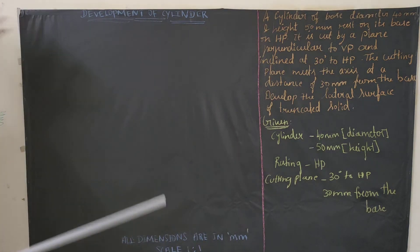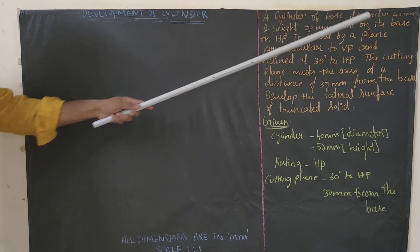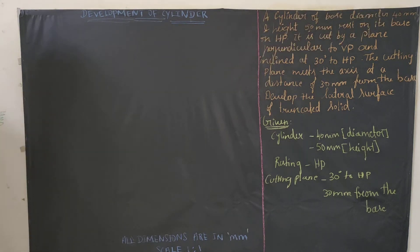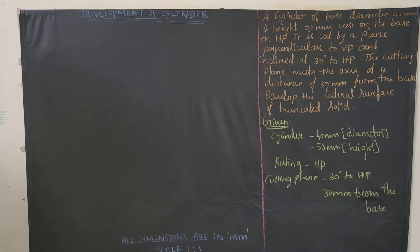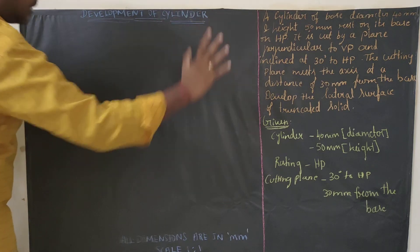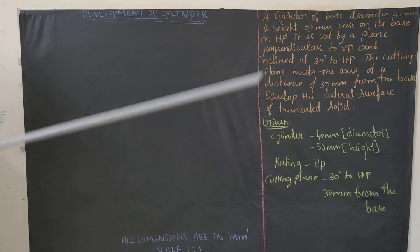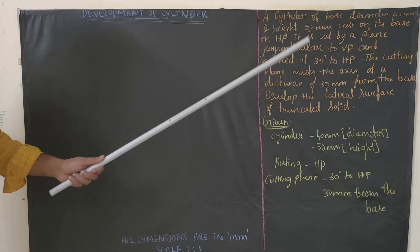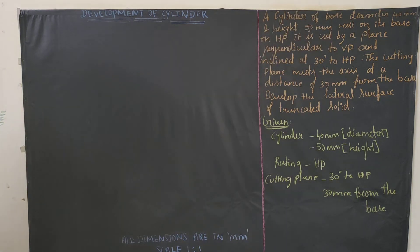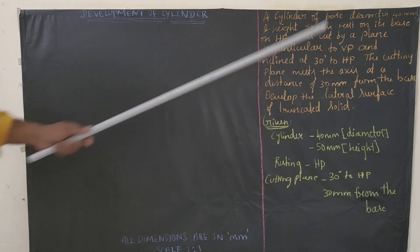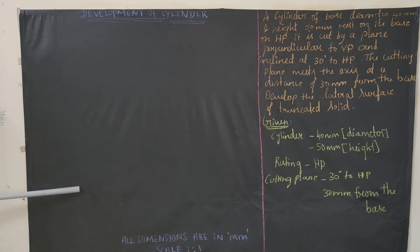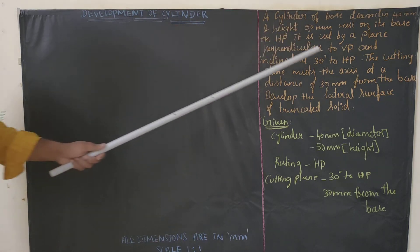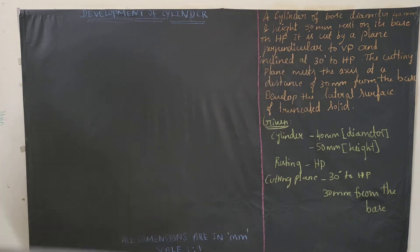So what is the question? A cylinder of base diameter 40 mm — cylinder is a solid, so the base circle will be a circle. We are going to draw a circle with radius 20 mm. The height is 50 mm, that is the axis of the cylinder. It rests on its base on HP, so we will draw the base diagram in HP. It is cut by a plane perpendicular to VP and inclined 30 degrees to HP.